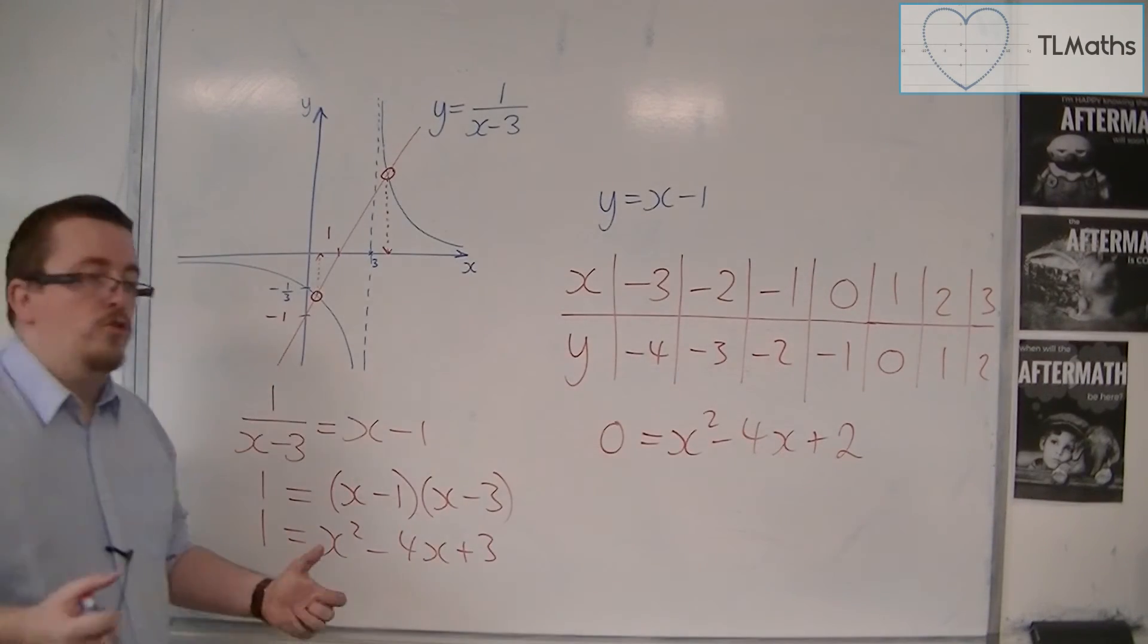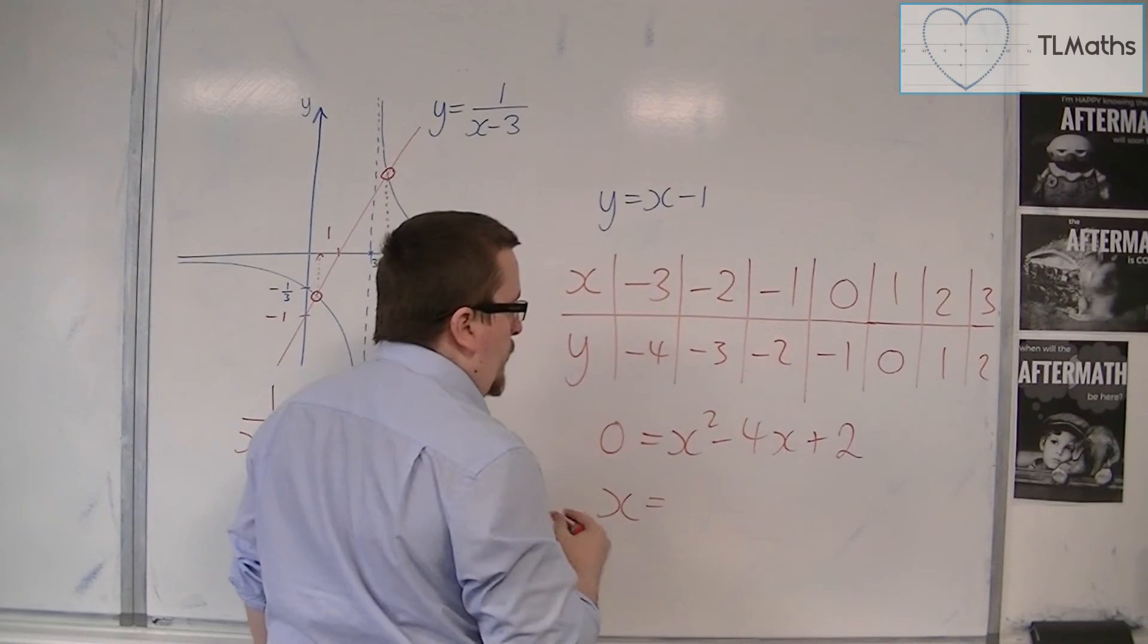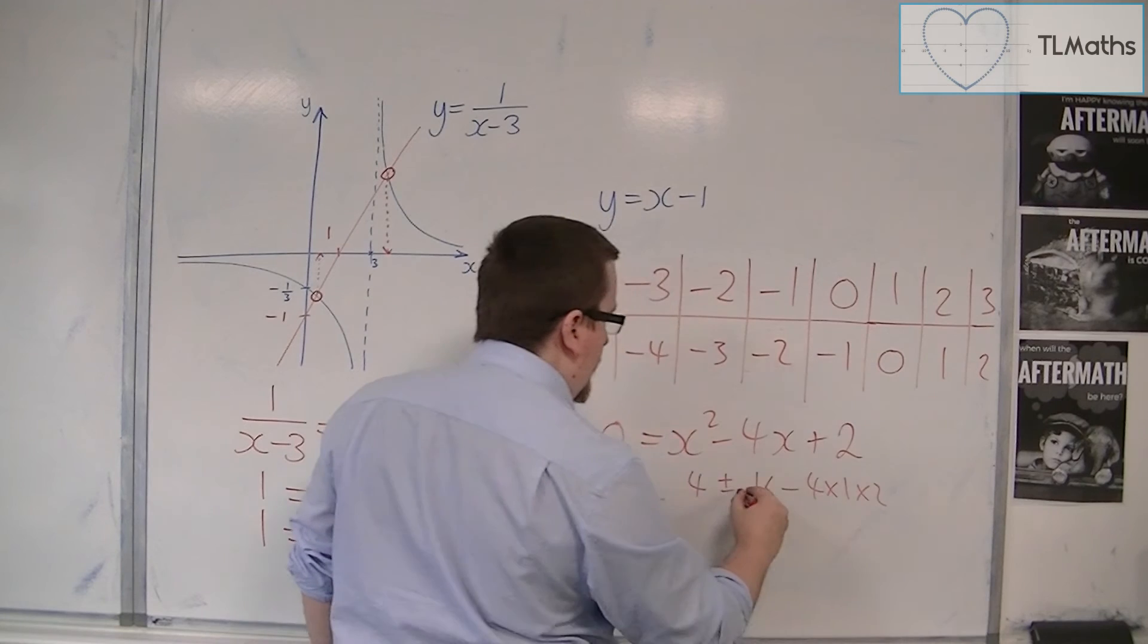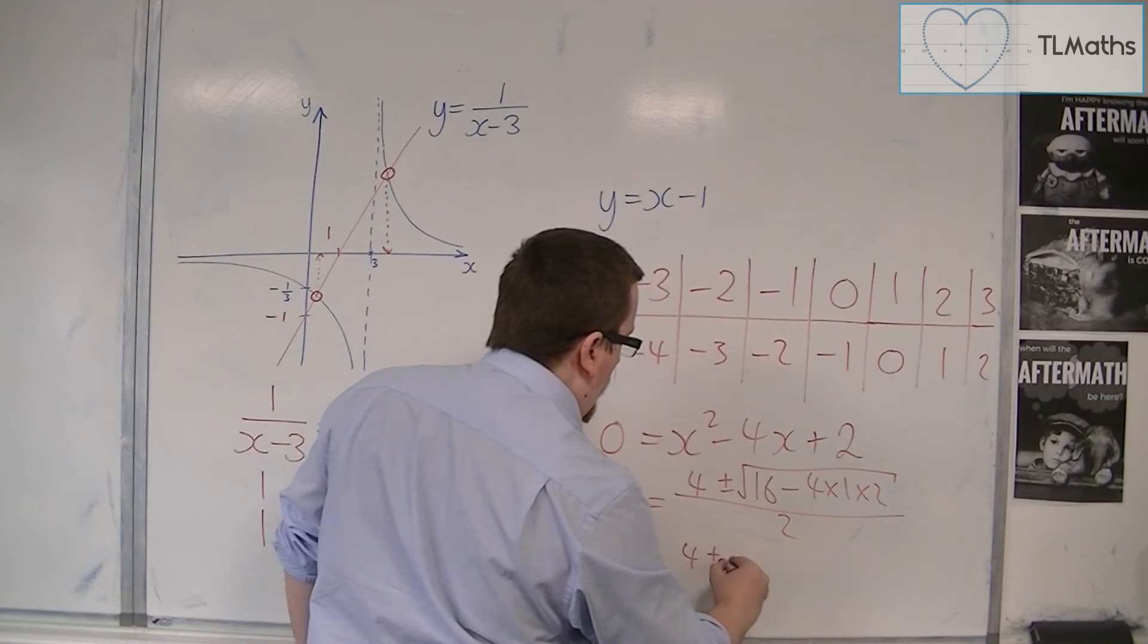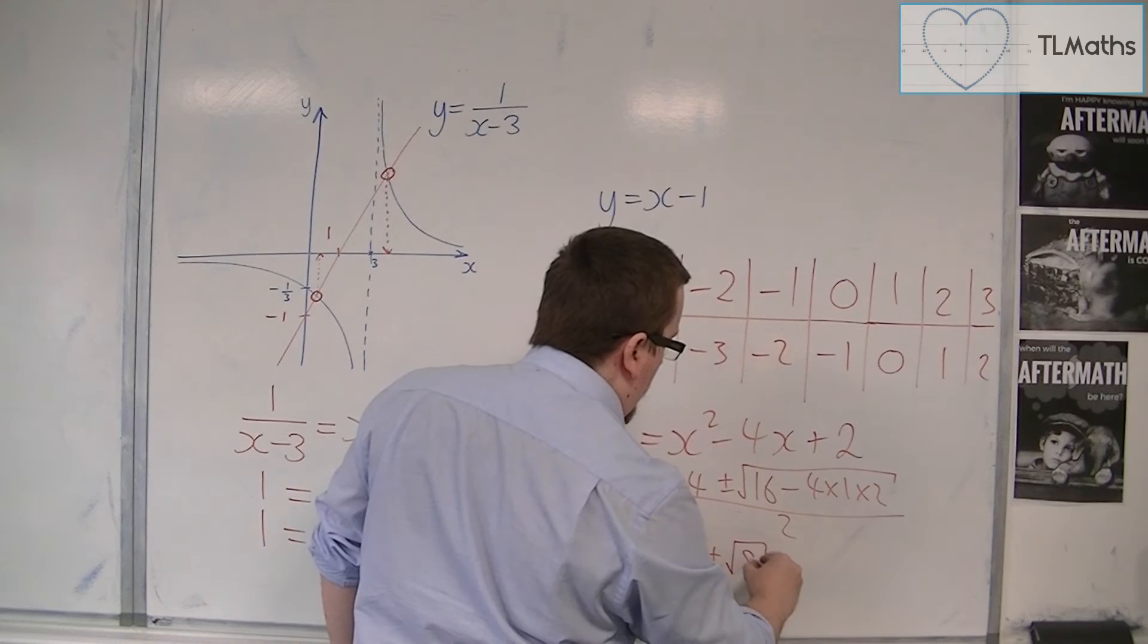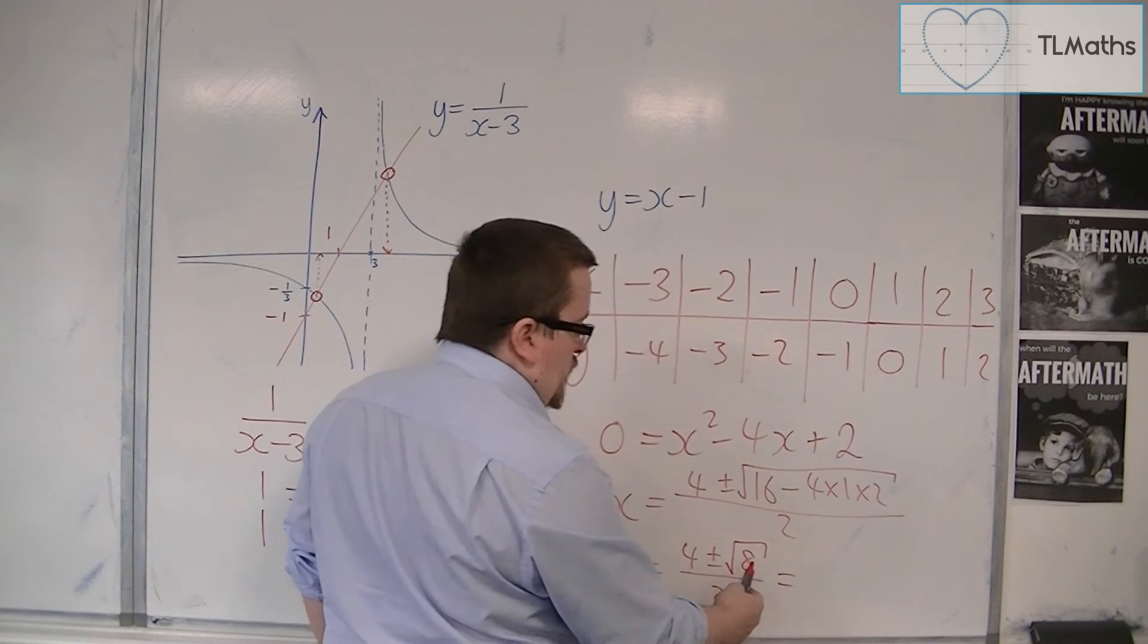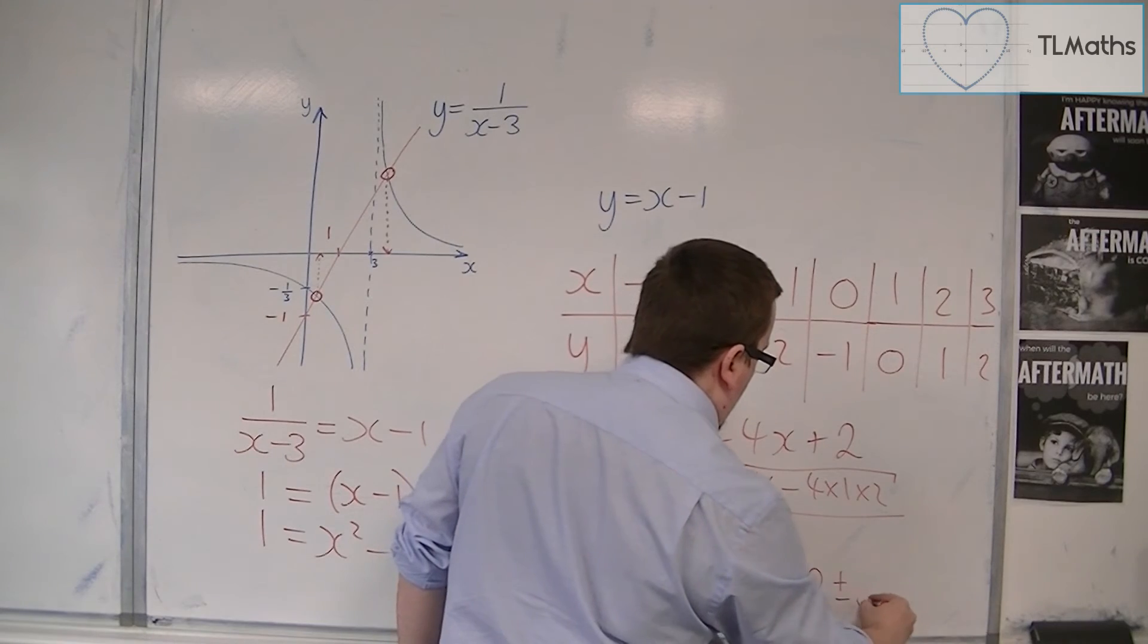And then I would use the quadratic formula. So x is equal to minus b plus or minus b squared minus 4ac all over 2a. So we would get 4 plus or minus, well that's 8, so square root of 8 over 2. So root 8 is 2 root 2, so we would have 2 plus or minus root 2.